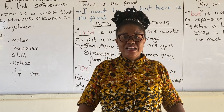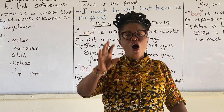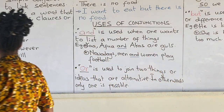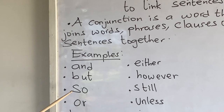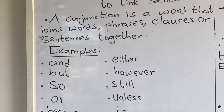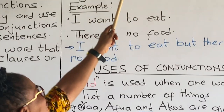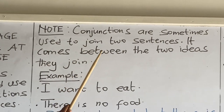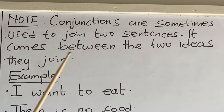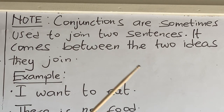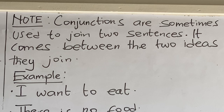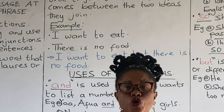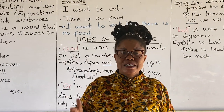But in today's lesson, we are going to look at four of them: and, but, so, and or. Note: conjunctions are sometimes used to join two sentences. They come between the two ideas that they join. Now, let's look at an example of how conjunctions are used to join two sentences together.